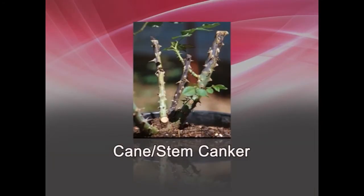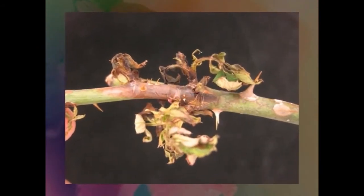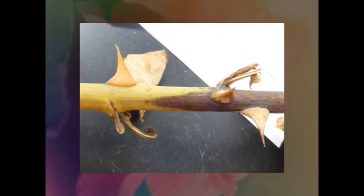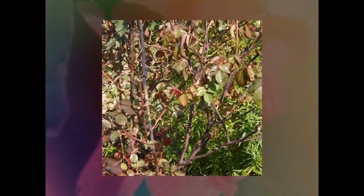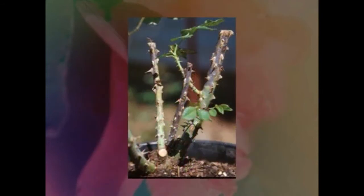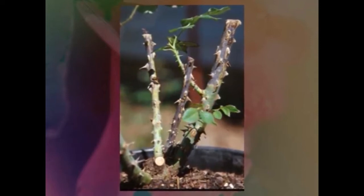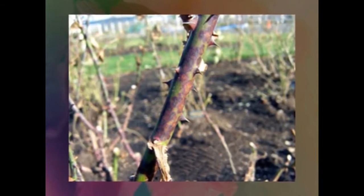The next disease is cane or stem canker. Causal organisms are Coniothyrium species and Botryosphaeria species. Canker usually appears as brown, black, or grey areas on a cane or stem of the rose bush, caused by damage from deep cold of winter or other injury. The disease is more commonly seen on plants stressed through poor management practices such as inadequate nutrition or irrigation. Waterborne spores enter mainly through pruning wounds or other injuries.